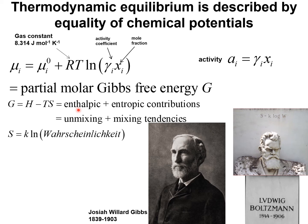These represent respectively the unmixing and the mixing tendencies when the system is subject to perturbations in composition. S is the entropy and is given by the Boltzmann equation: S = k·ln(W), engraved on his tombstone in Vienna. The symbol W stands for Wahrscheinlichkeit. You will note that Josiah Willard Gibbs and Ludwig Boltzmann were contemporaries.